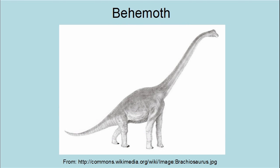Job 40:15–24 describes an animal called Behemoth. It is described as having a tail like a cedar tree — probably a Brachiosaurus or some type of dinosaur. Some people claim that Behemoth was an elephant or a hippopotamus. The problem is that neither of them have tails even remotely resembling a cedar tree — their tails look like little pieces of rope. It has even been suggested that this is a reference to an elephant's trunk, but that assumes that God and Job did not know the difference between a trunk and a tail.